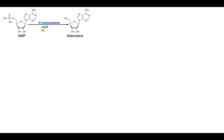We're going to first talk about the A's and then we'll get to the G's. For the A's, we begin with adenosine monophosphate (AMP). The enzyme 5' exonuclease uses water to hydrolyze off the phosphate, which leaves us with the compound called adenosine.